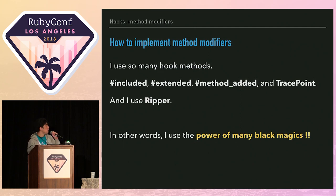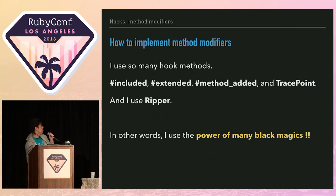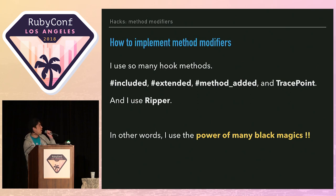How to implement these method modifiers? I used many hook methods: included, extended, method_added, and TracePoint. And also I used Ripper. In other words, I used the power of many black magics in Ruby.